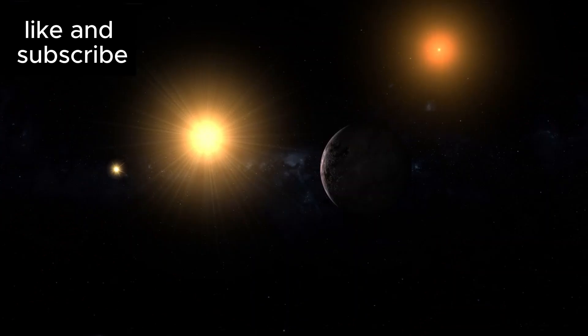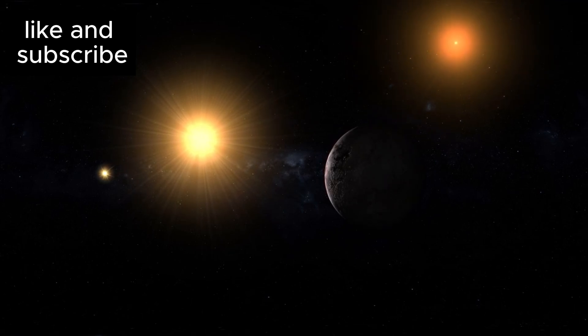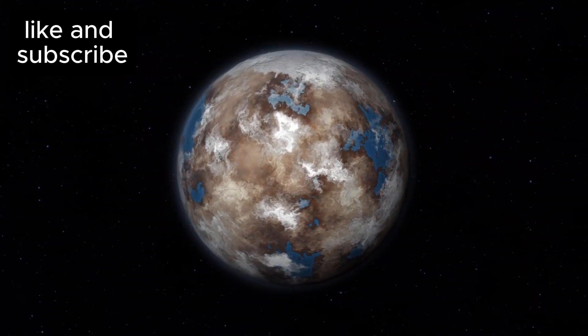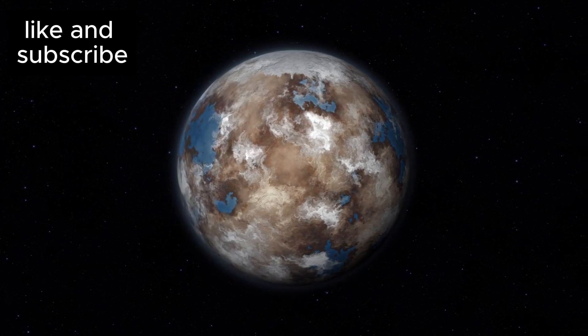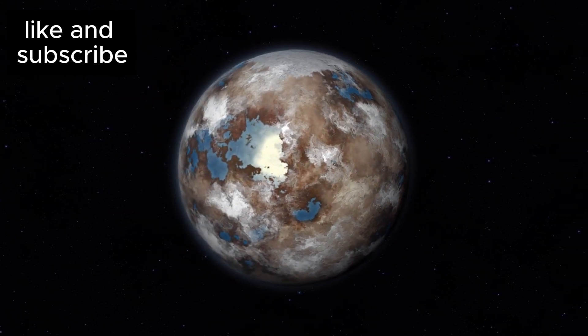Proxima b is a fascinating exoplanet discovered in 2016, and it sits comfortably in the habitable zone of its star, Proxima Centauri, a star that is just over four light years away from us. This planet, which is about 1.2 times the mass of Earth, had previously been seen as a prime candidate for water and even the possibility of life.